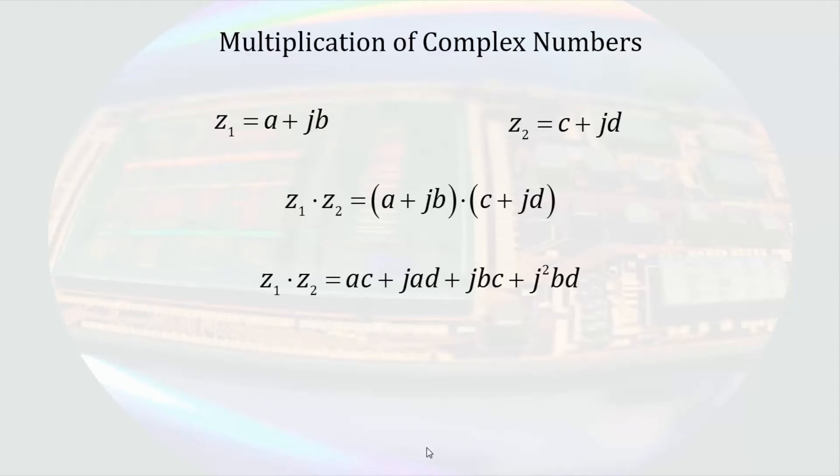Multiplying z1 times z2, the first terms give us a times c. The outer terms give us j times ad. The inner terms give us j times bc. And the last terms give us j squared times bd. Remember that j squared is equal to negative 1, then z1 times z2 is equal to the quantity ac minus bd plus j times the quantity ad plus bc.